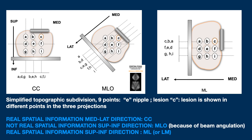I demonstrate here with this rather simple drawing how a lesion appears at different points depending on the projection. This subdivision is a topographical type — nine points. E is the nipple, and the lesion is at point C.